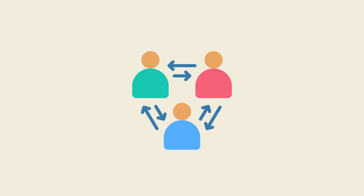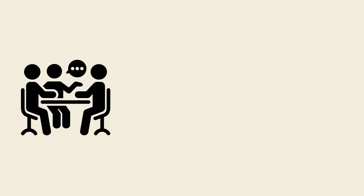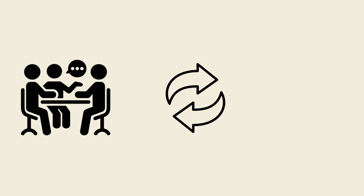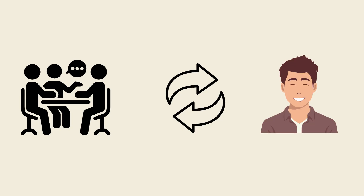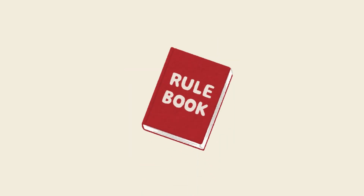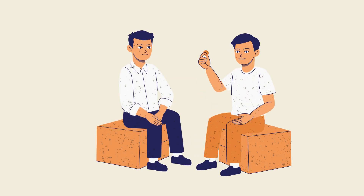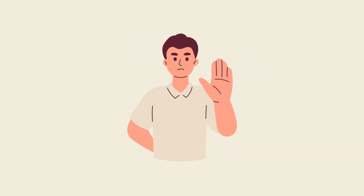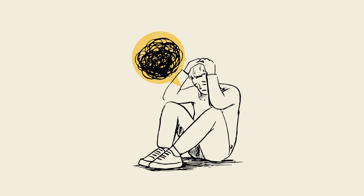Social interaction is where challenges often appear. The unspoken rules of conversation — when to change the topic, how to read facial expressions, why 'I'm fine' sometimes means 'I'm mad at you' — don't come naturally. Instead, people with Asperger's often learn these rules manually, like installing software. They may rely on scripts or guidelines to get through conversations. This doesn't mean they don't care; on the contrary, many care deeply. But the messy, inconsistent ways humans communicate can feel confusing or frustrating.